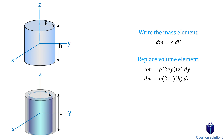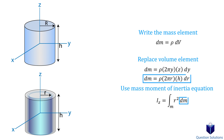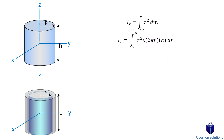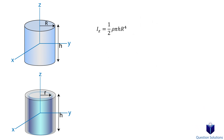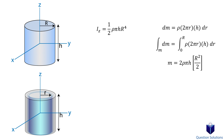Now we can write down our equation for the mass moment of inertia and replace dm with the value we found before. The lower bound starts at 0 and the upper bound is the radius of our cylinder. We bring all the constants out — that includes the density, pi, and the height. Let's do the integral and solve. We simplify and we have the mass moment of inertia, but we don't want to leave it like this. Instead, we want to write this in terms of mass, so we need to find the mass of our cylinder by integrating and adding up all the tiny mass elements.